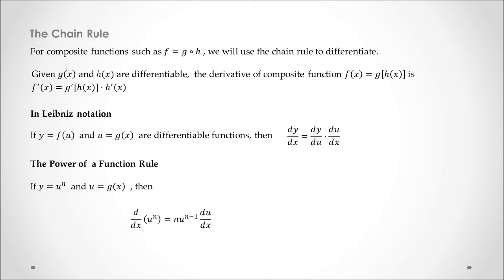then we can say that d dx of u at power n is going to be, very similarly to the power rule, n times u at power n minus 1, and also times du dx. Because we don't have x, we have u, we have to multiply by the derivative of u in regards to x.